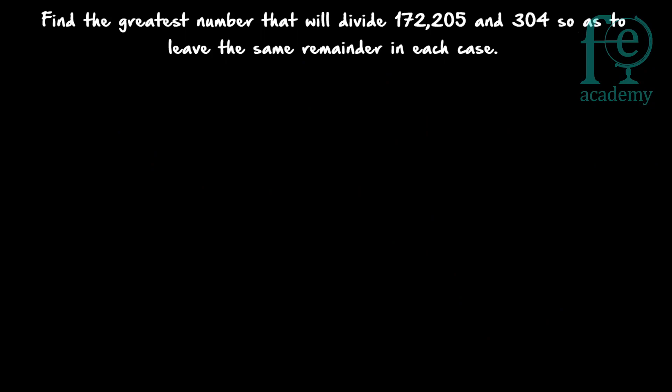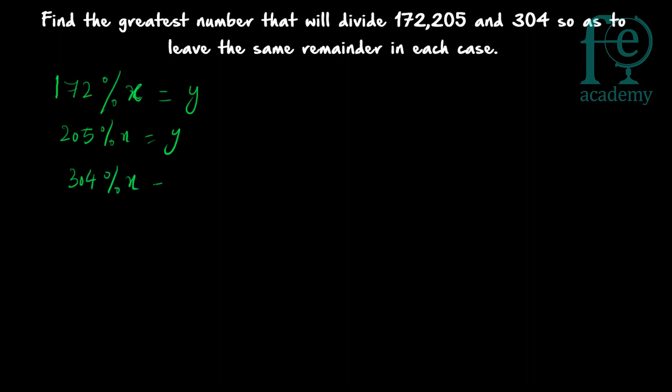Second question: find the greatest number that will divide 172, 205, and 304 so as to leave the same remainder in each case. This is a very common problem in competitive exams. Let x be the greatest number. Then 172 mod x = y, 205 mod x = y, and 304 mod x = y — the same remainder y in all three cases.